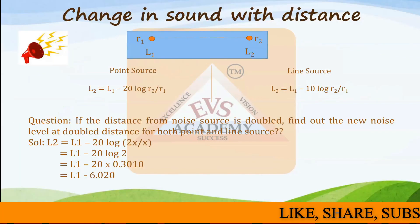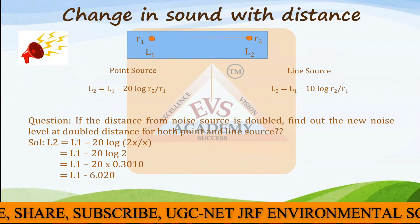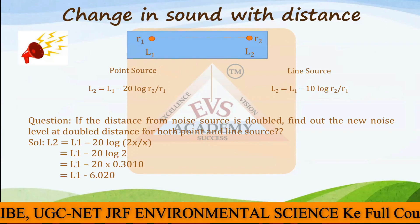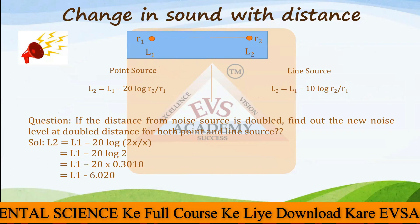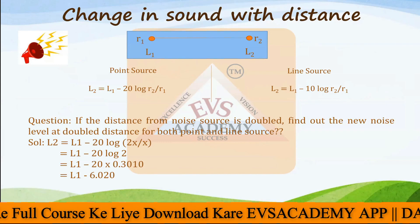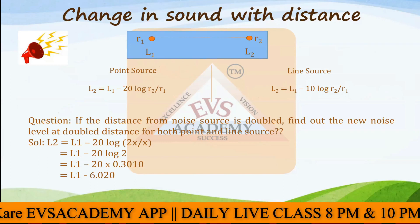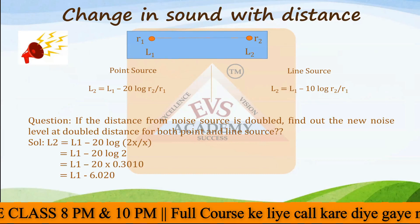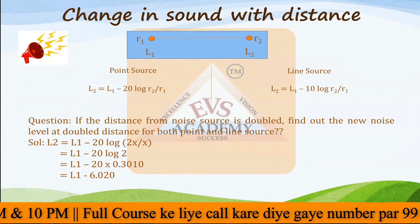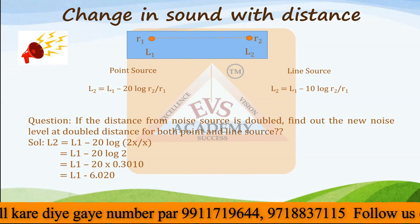Welcome again to the classes of EVS Academy. In the last lecture, we were discussing noise pollution and completed a few portions, with a few remaining. In the last class, we were discussing how there is a change in sound with increasing distance. With increasing distance, the sound level goes down compared to the previous distance, and that's how you can calculate the value change for different types of sound sources.